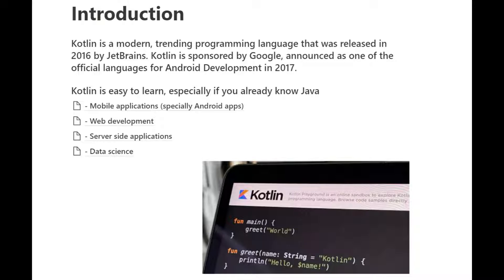Kotlin is a modern, trending programming language that was released by JetBrains. It was sponsored by Google and announced as one of the official languages for Android in 2017. Kotlin is a free, open source, statically typed programming language that combines object-oriented and functional programming features. It is focused on interoperability, safety, clarity, and tooling support. Kotlin is used for mobile application development for Android, web development, server-side applications, and for data science.